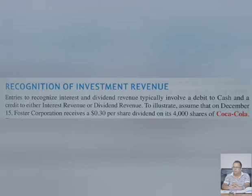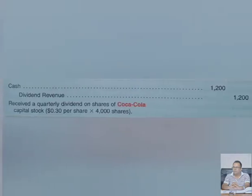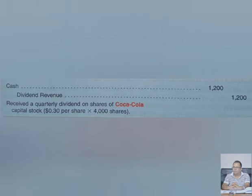If we invest in bonds, we get interest; if we invest in shares, we get dividend. In both cases the entry is the same: Cash debit — because we receive dividend or interest in cash — and then Dividend Revenue credit. If it is interest instead of dividend, we use Interest Revenue credit.